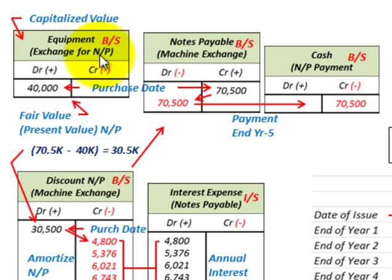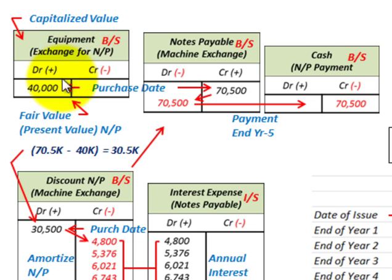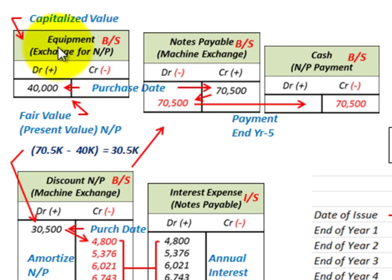To summarize, we went through the simplest form of a deferred payment where we exchanged a note payable with a single payment at the end of the fifth year for equipment. We had to determine the capitalized value of the equipment, which was simply the present value of the note exchanged. When working with property, plant, and equipment, you must determine the capitalized amount. In this case, we didn't know the equipment's cost, but we had exchanged a note, so we determined the equipment value as the present value of that note.